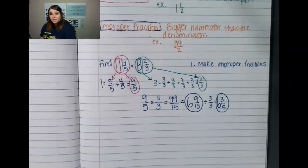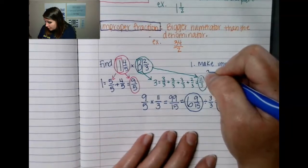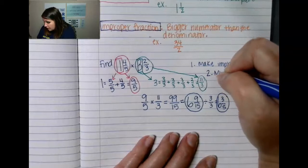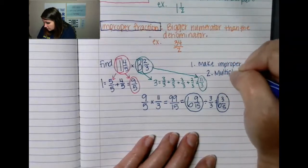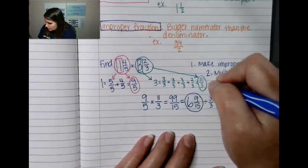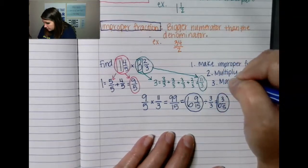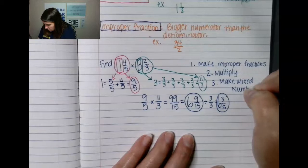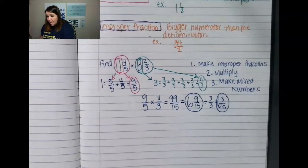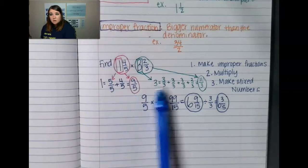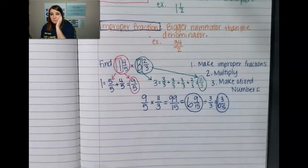And we just multiplied mixed numbers. So step two for multiplying mixed numbers is to multiply straight across — multiply the numerators and multiply the denominators. Then step three is to make mixed numbers. That is how we multiply mixed numbers: turn them to improper fractions, multiply them, and then make them mixed numbers.